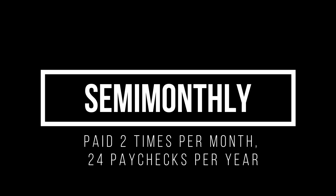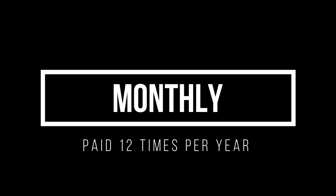Semi-monthly means paid twice per month. I use semi-monthly payments to pay my employees — they get paid on the 5th and the 20th of every month. Since there are 12 months in a year times two payments per month, there are 24 paychecks per year. Monthly means paid once a month — that's 12 times per year. That's how teachers get paid, at least in our school district.